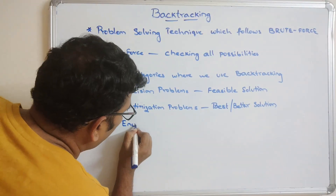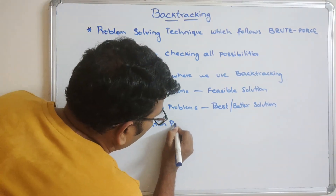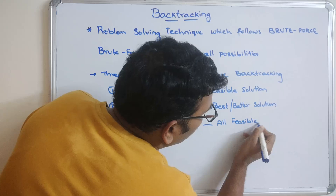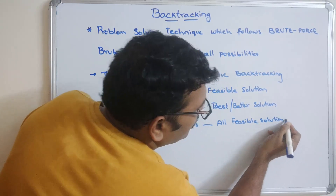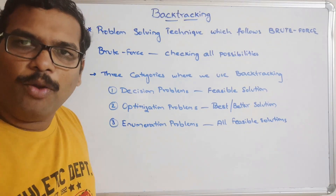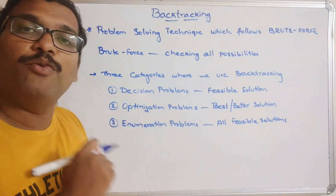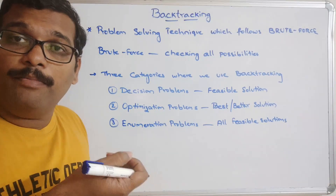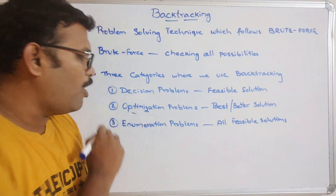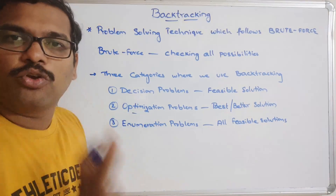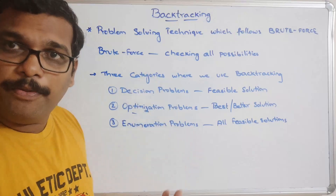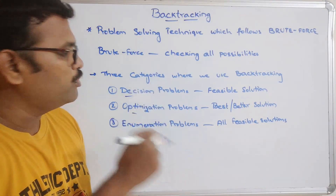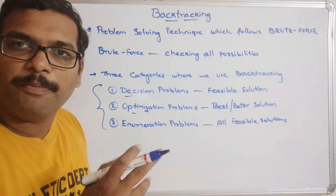The third category is enumeration problems — finding all possible solutions. So: if you want to find all possible solutions, that is an enumeration problem; if you want the optimal solution, that is an optimization problem; if you just want a solution that may or may not be optimal, that is a decision problem. This backtracking technique is used to solve all three kinds.